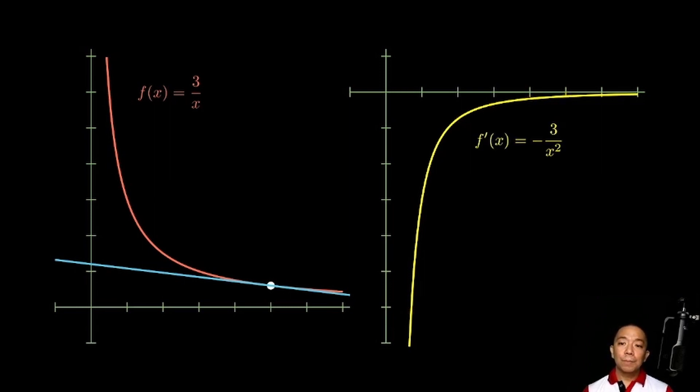This is equal to negative 3 over x squared. But since we know that yung function na nafoform natin from the slopes of the tangent line of f of x, this is the derivative of f of x. Kaya, f prime of x, the derivative of f of x, is equal to negative 3 over x squared.